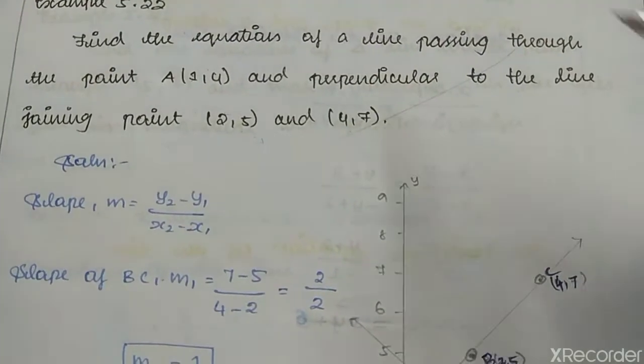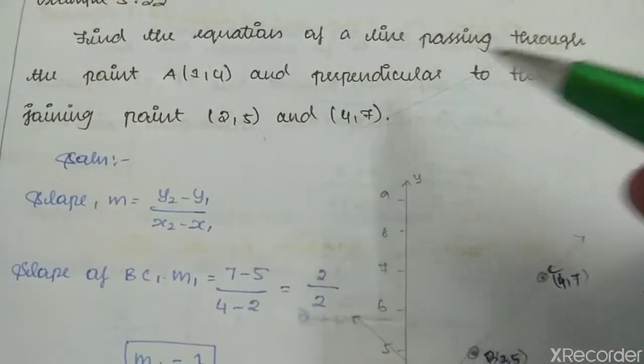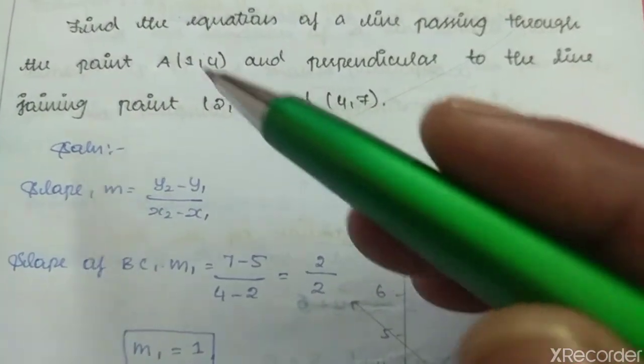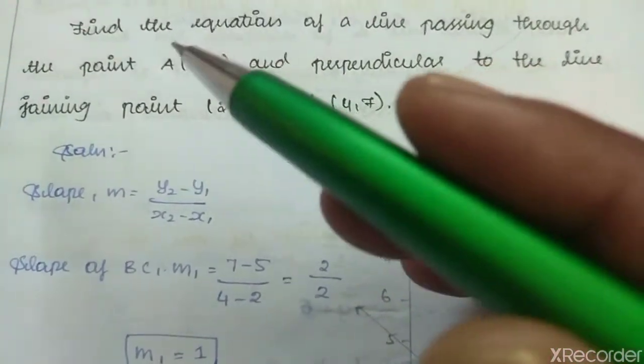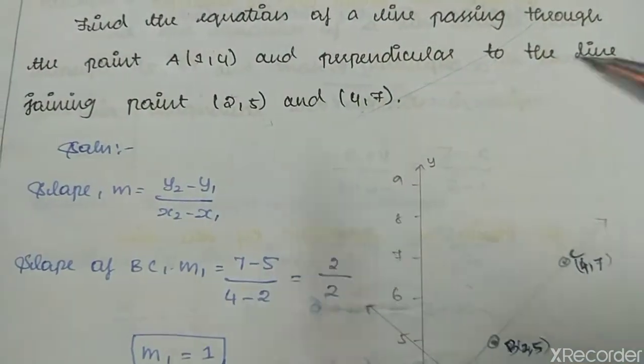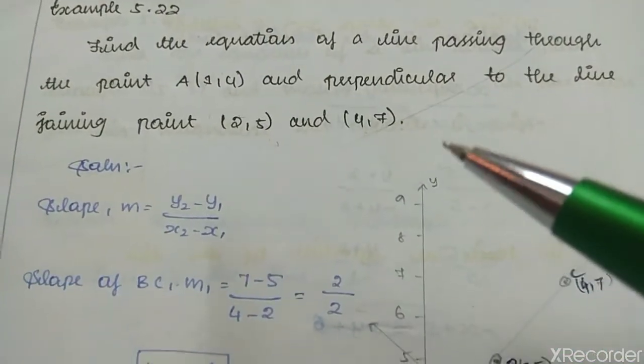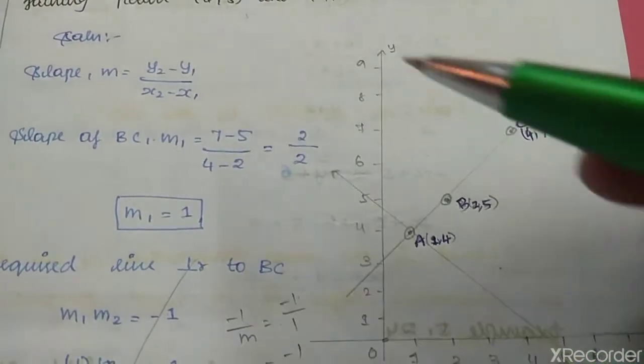Example 5.22: Find the equation of the line passing through the point A(1,4) and perpendicular to the line joining the points (2,5) and (4,7). First, let's identify these points on the coordinate axes.